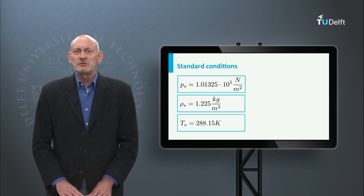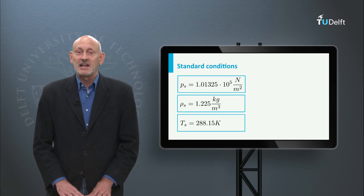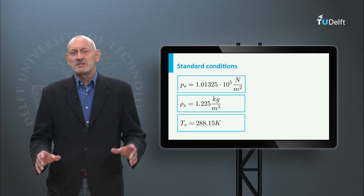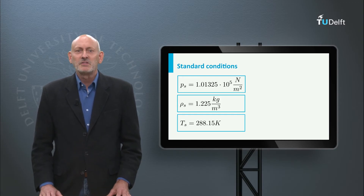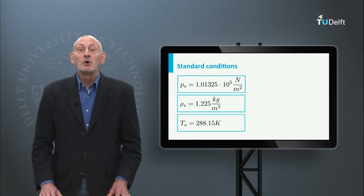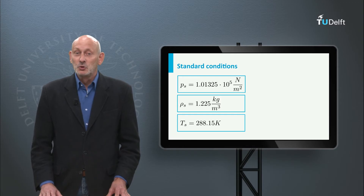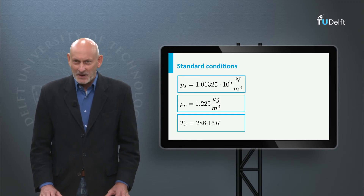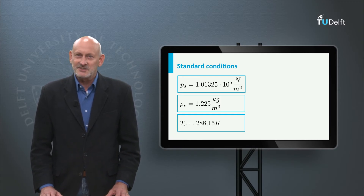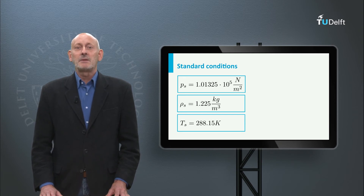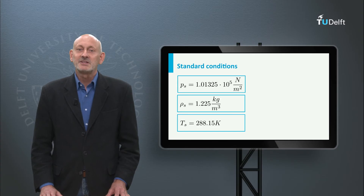We often refer to the properties of air at standard sea level conditions. Then the pressure is 1 atm, or 1013.25 hectopascal, or 1.01325 times 10 to the power 5 newtons per square meter. The density is 1.225 kilograms per cubic meter, and the temperature is 15 degrees Celsius, or 288.15 Kelvin.